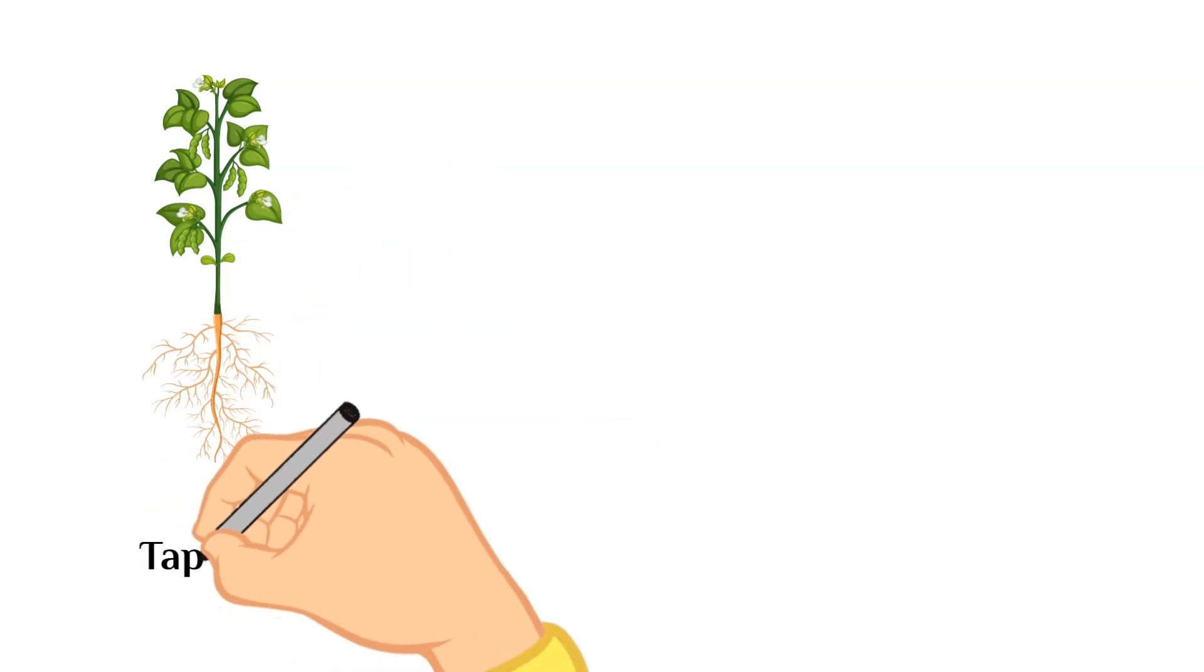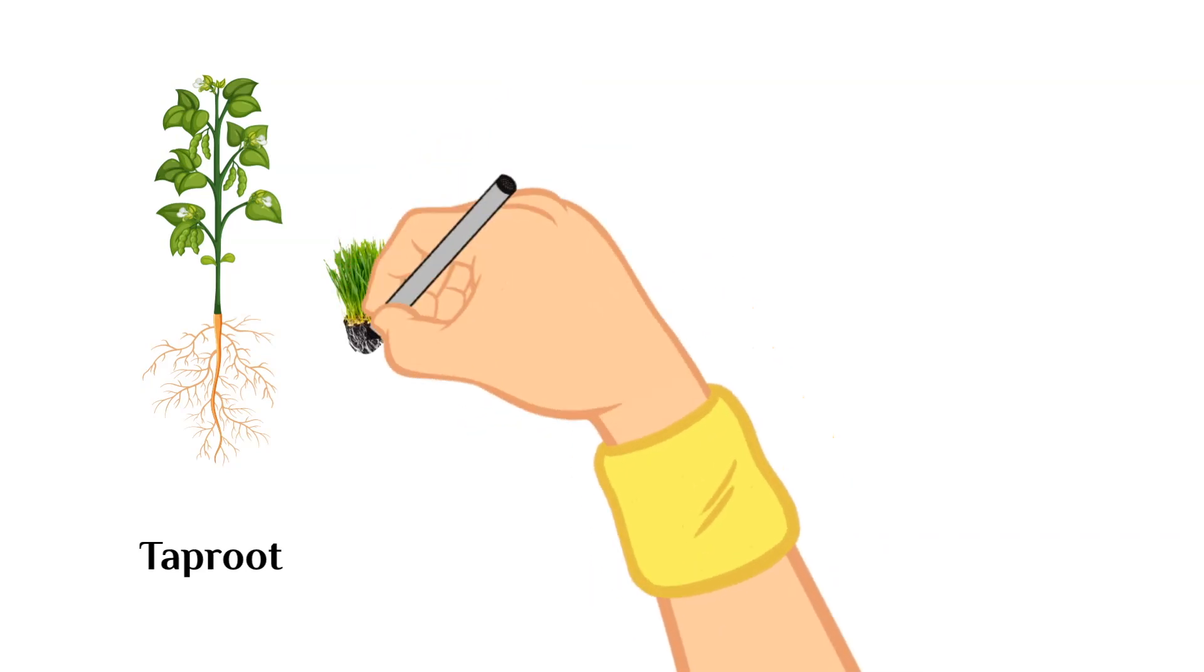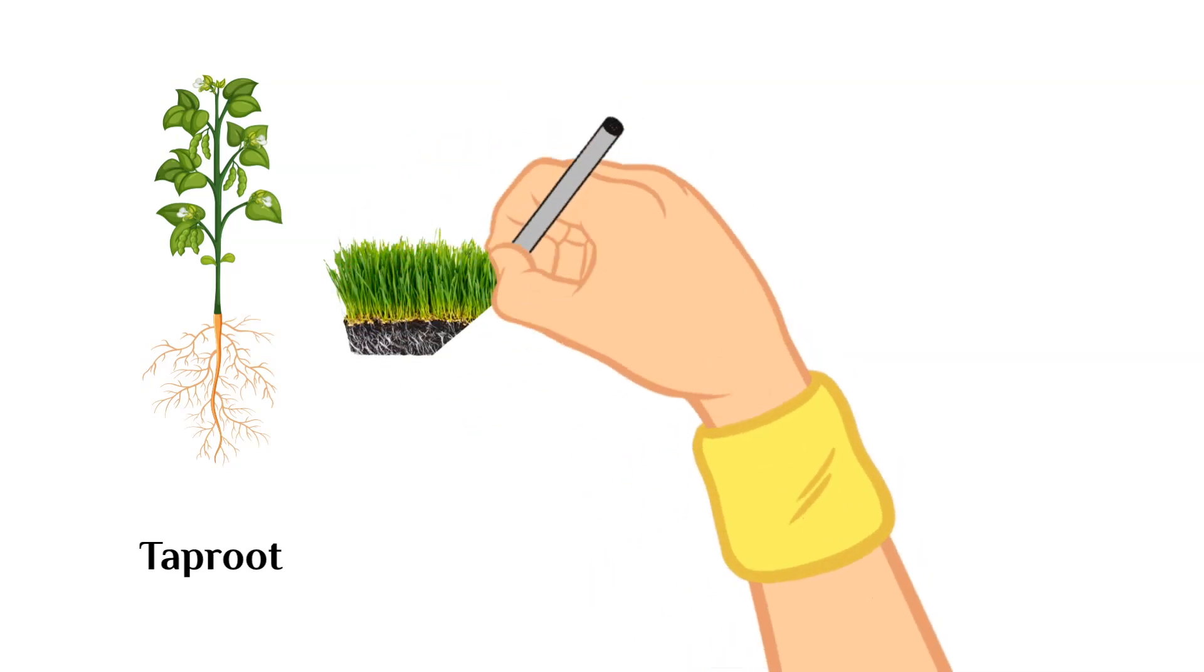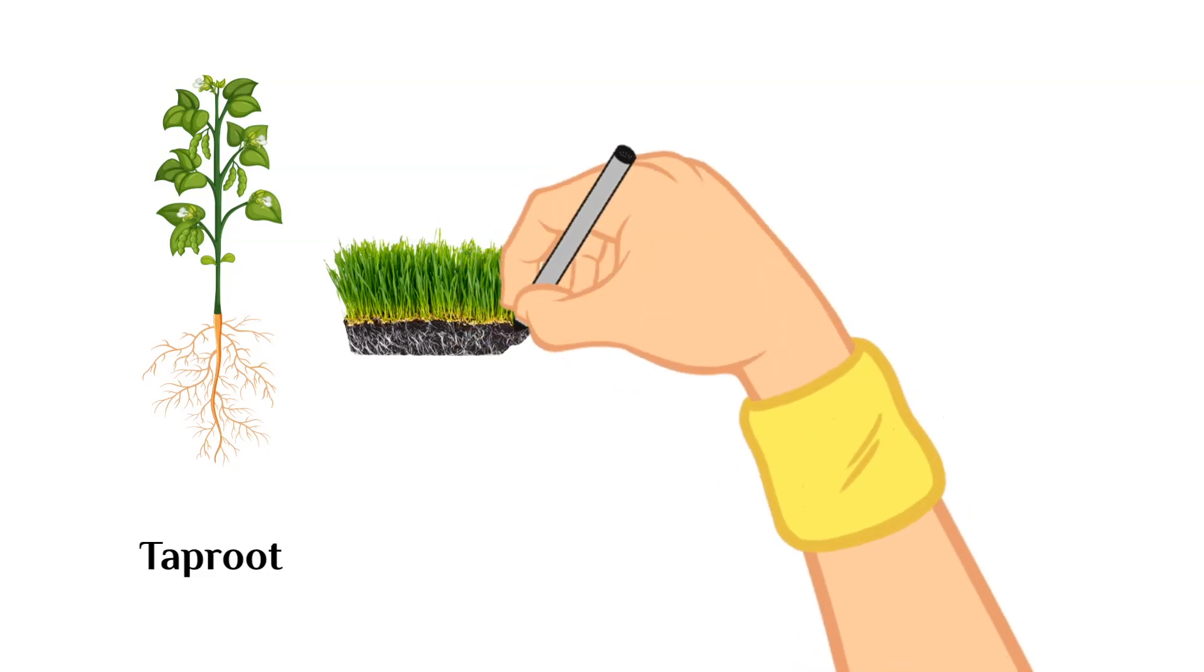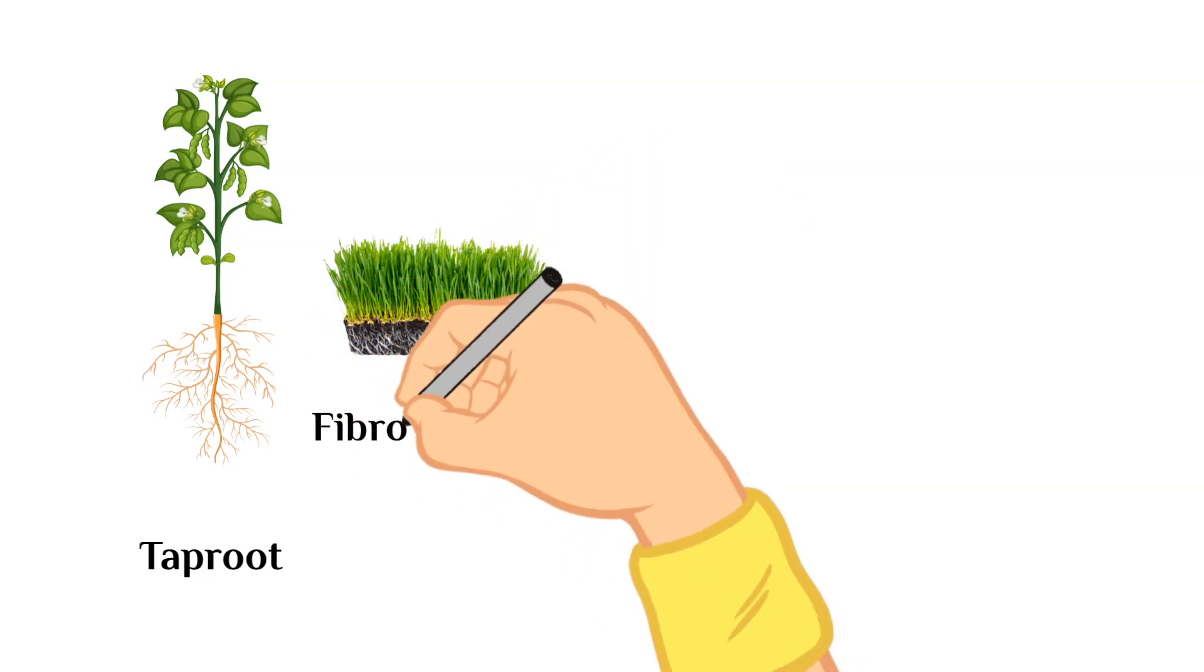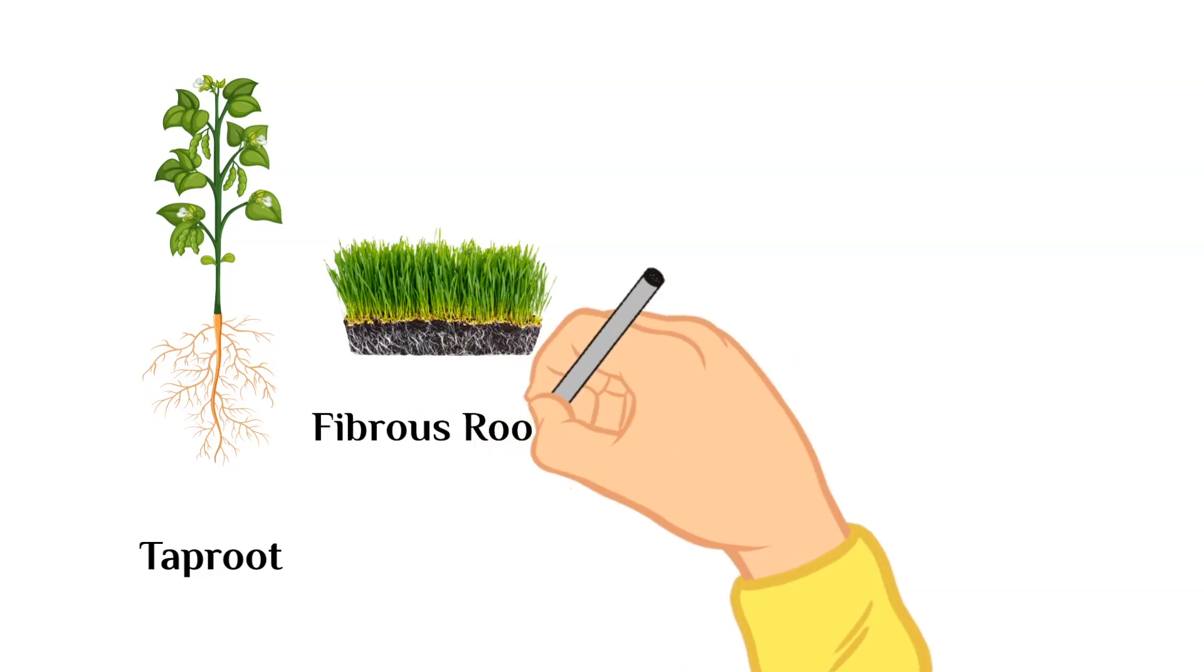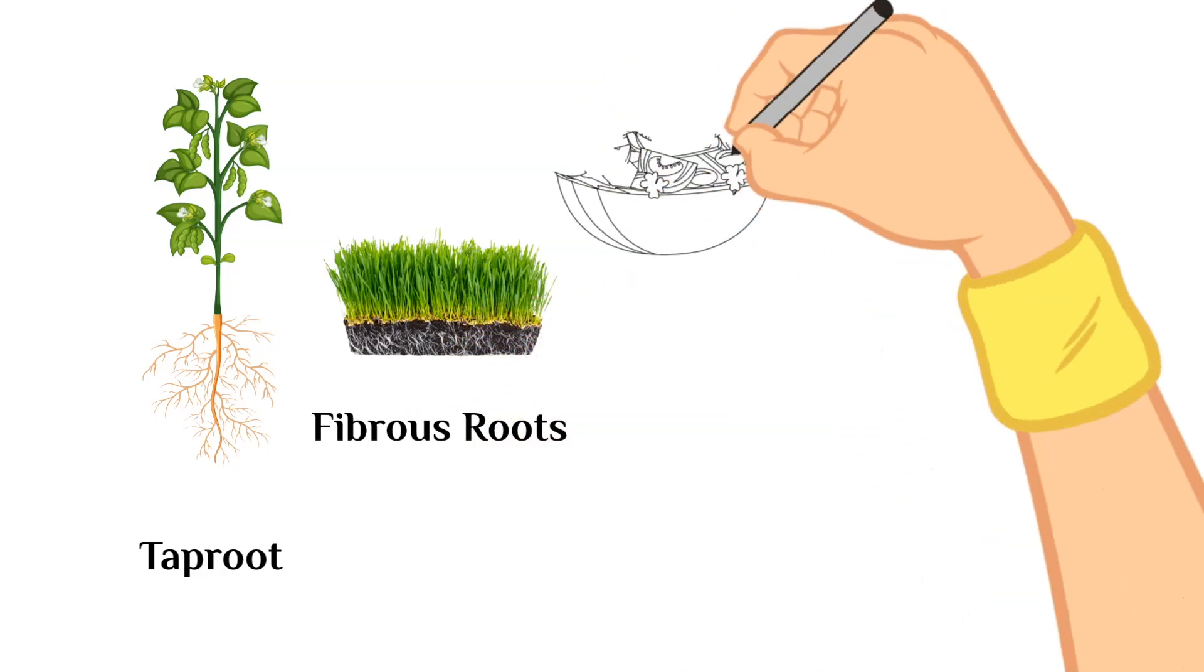There are the plants with a tap root system and that is when there's that center root with smaller roots branching off of it. We talked about this a little bit in last week's video and then there's a fibrous root system and in this type of root system, the roots grow in all directions and all over the place and there's no middle main root.